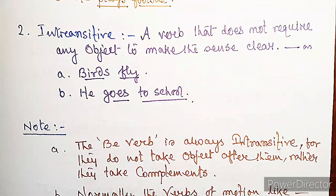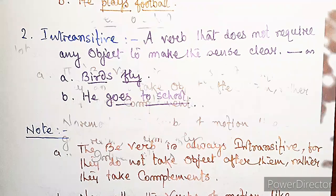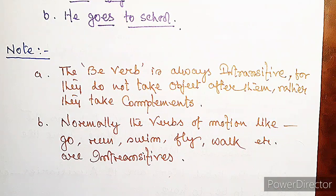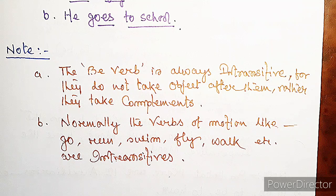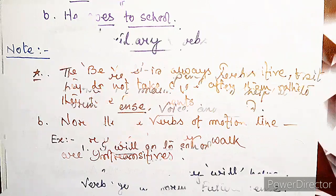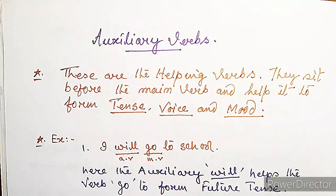Note: the be verb is always intransitive — they do not take an object, rather they take complements. Also, verbs of motion like go, run, swim, fly, walk, etc. are always intransitive.